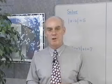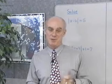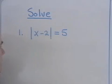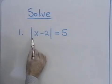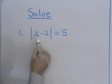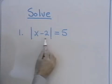Next, we want to look at equations that involve absolute value. Here's our first example. Let's solve the equation: the absolute value of the quantity x minus 2 is equal to 5.